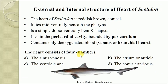Let us see the external structure of the heart of Scoliodon. The heart of Scoliodon is reddish-brown in color, it is conical, and it lies midventrally beneath the pharynx in the head region. This heart is a simple dorsal-ventrally bent S-shaped muscular tube and it lies in a cavity known as the pericardial cavity.